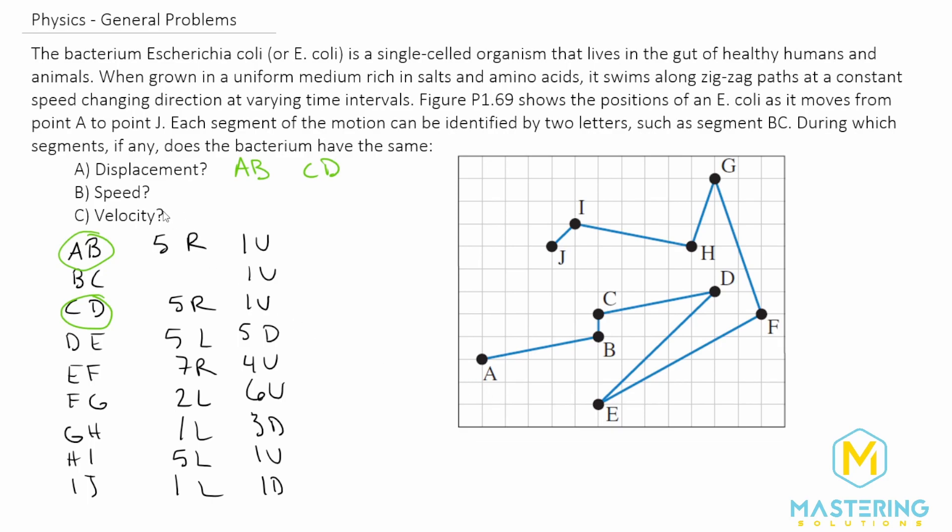Now with speed, the question says that the E. coli goes the same speed the entire time. So the question actually answered itself and they all are the exact same. There's no magnitude and direction component to speed because it's scalar, meaning it's only magnitude and the direction doesn't matter with speed.